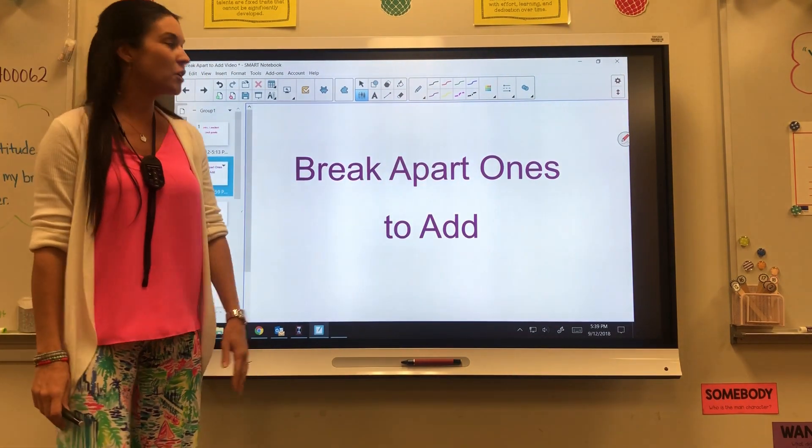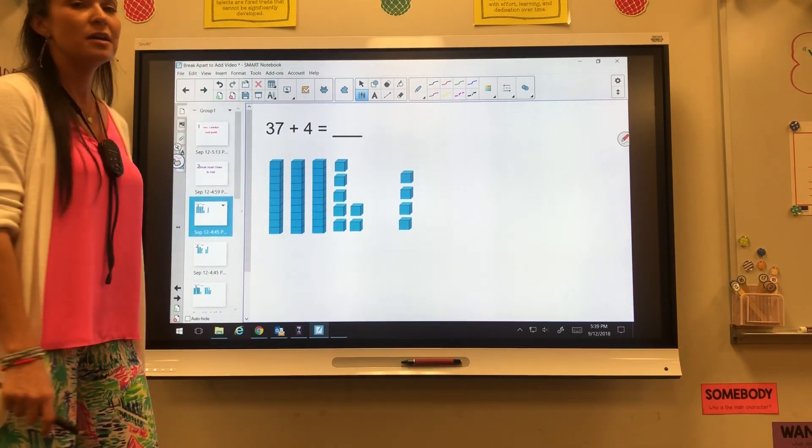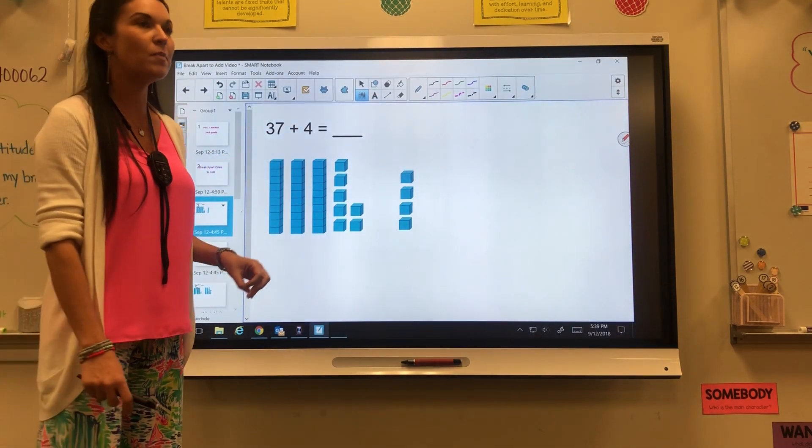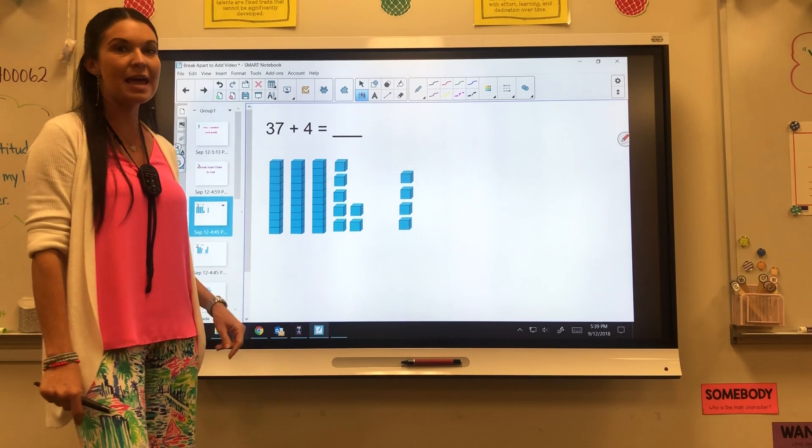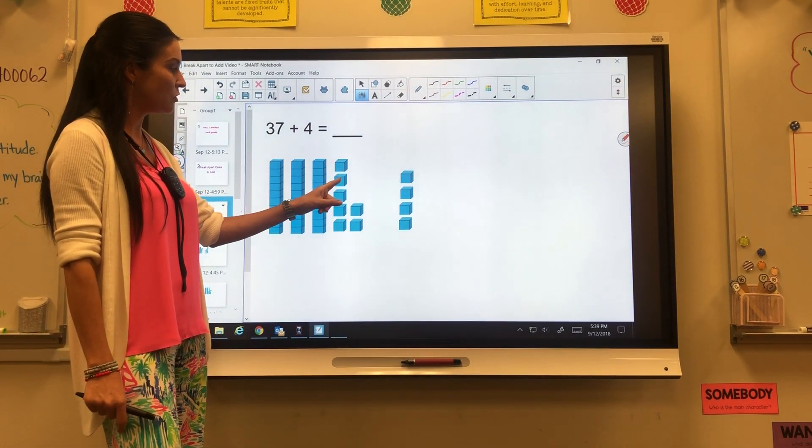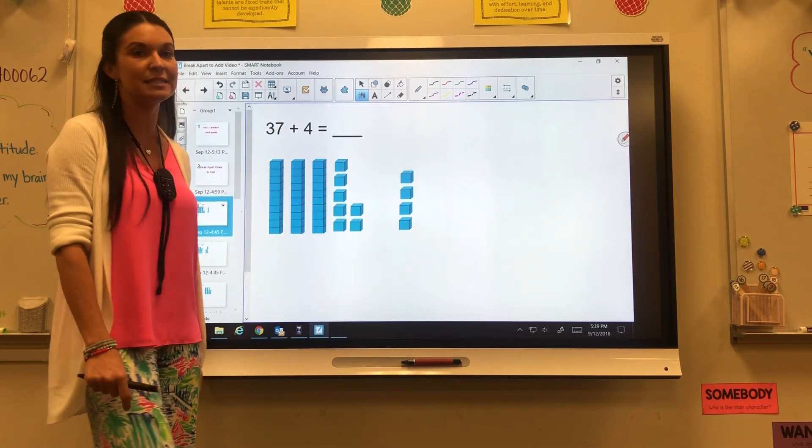The first one that we've started with is breaking apart ones to add. For example, if I had 37 plus 4, we're going to go back to our tens and ones. For 37, I'm going to need three tens: 10, 20, 30. And then for my seven: one, two, three, four, five, six, seven ones. That gives me 37.